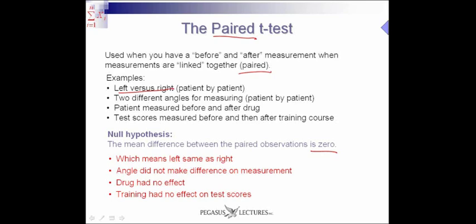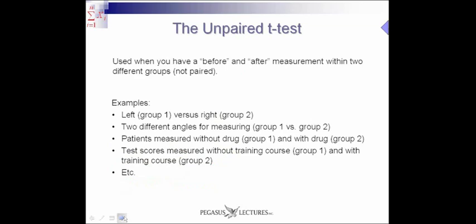In terms of the examples we've given: when we said left versus right patient by patient, the null hypothesis would mean that the left and the right give the same results. Or in the case of two different angles, that the angles didn't matter — they make no difference in the measurement. Or the patient was the same before and afterwards, meaning the drug had no effect. And finally, that the training had no effect on the test scores — so when we test the students before and then after the training course, they really had the same results, the same distribution.